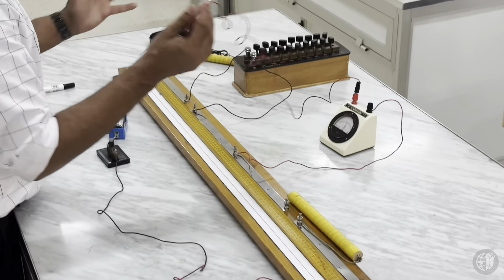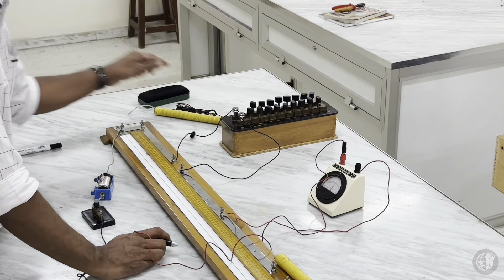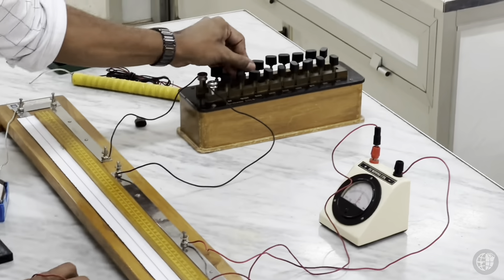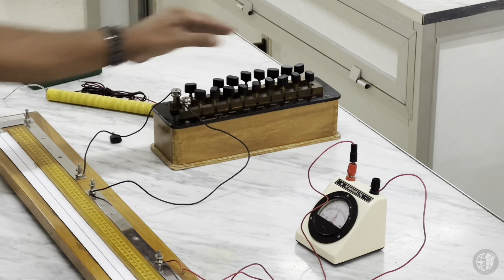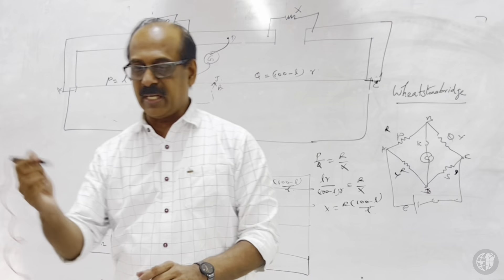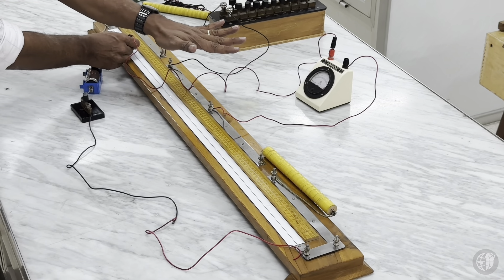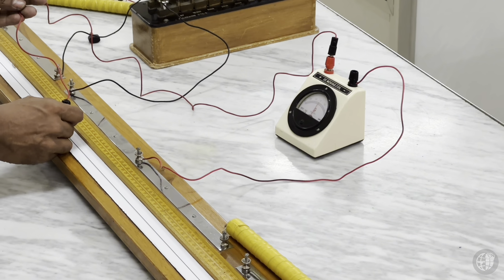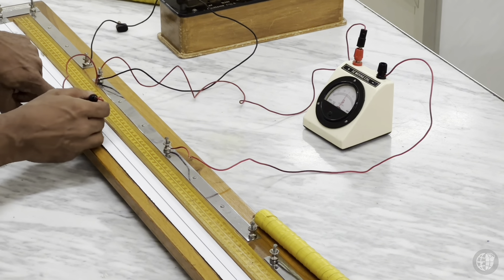For the balancing condition, first introduce 2 ohms in the resistance box. Make sure all keys in the resistance box are tightly connected for accuracy. Now find the balancing point by moving the jockey on the wire. At one end the galvanometer deflects one way; at the other end it deflects the other way. Slowly bring the jockey to find the point where the galvanometer shows zero deflection.